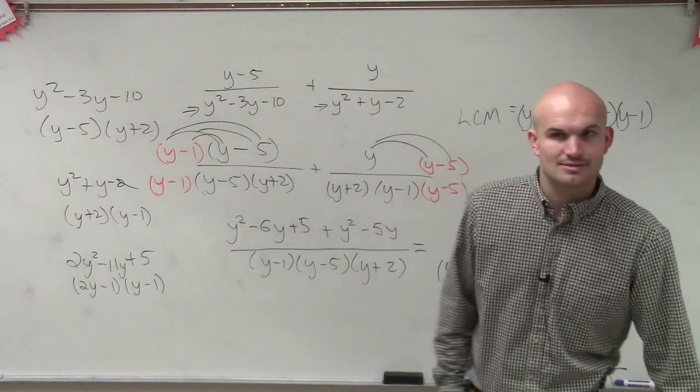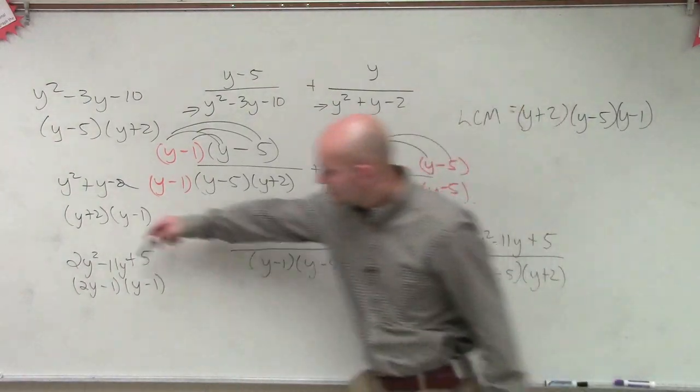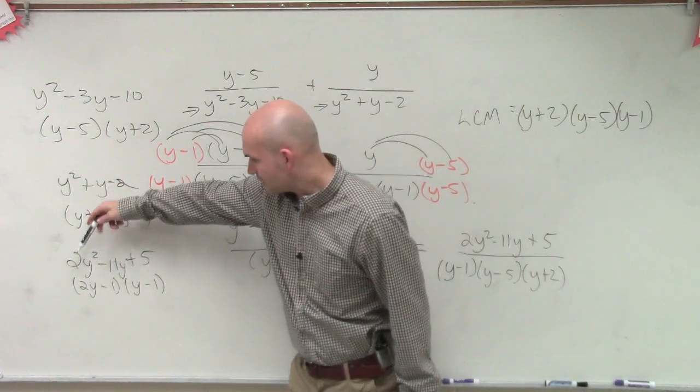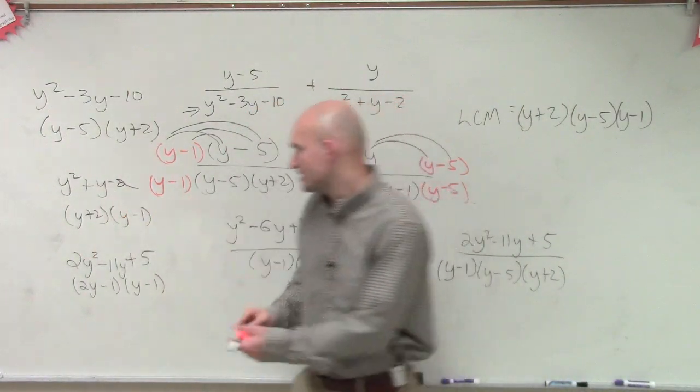Would you guys agree with me on that? Let's check it. 2y times y is 2y squared. 2y times, no, sorry, that's 5. I said it, but I didn't write it.